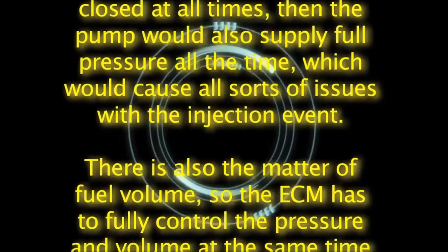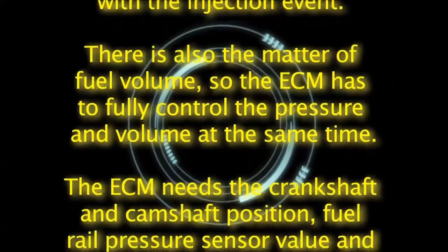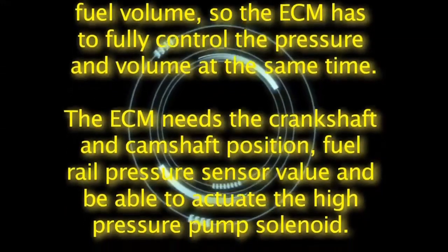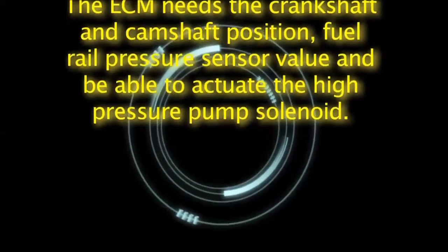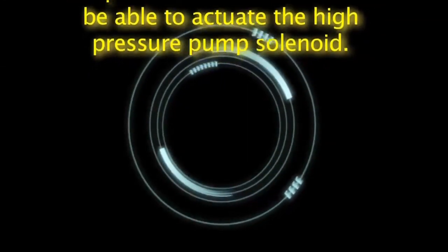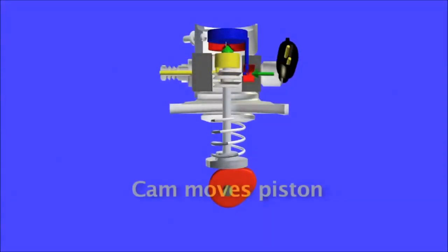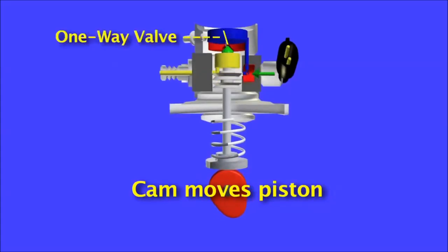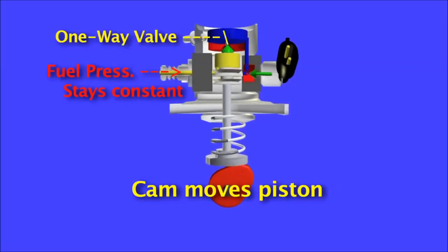There is also the matter of fuel volume, so the ECM has to fully control the pressure and volume at the same time. The ECM needs the crankshaft and camshaft position, fuel rail pressure sensor value, and be able to actuate the high pressure pump solenoid. As the camshaft actuates the plunger, the ECM closes the upper one-way valve to prevent fuel pressure from returning back to the plunger piston chamber. In other words, the fuel rail pressure stays the same even if the engine is shut off.